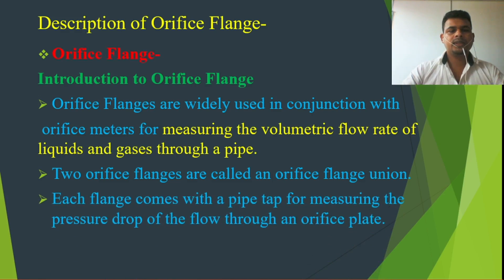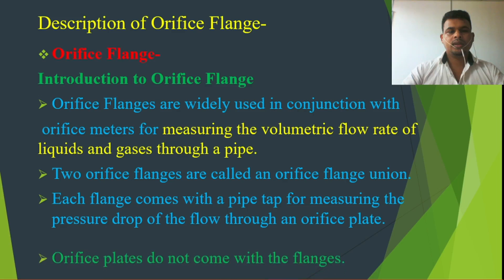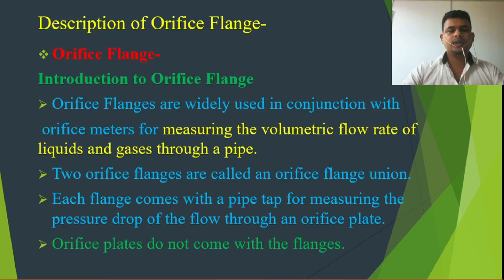Each flange comes with a pipe tap for measuring the pressure drop of the flow through an orifice plate. Each orifice flange has a tap hole as mentioned earlier. Also, orifice plates do not come with the flanges — the orifice plate is only the plate itself. It comes separately.